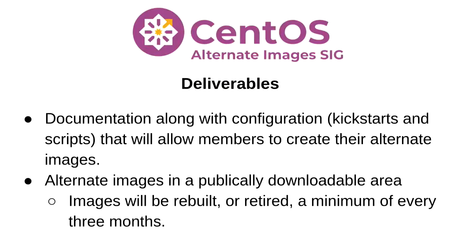Deliverables. There are really only going to be two: the first is documentation and a GitLab repo where we can put how to do things and the scripts. The other deliverable is the images themselves. For creating the images, we are going to, if at all possible, use CentOS infrastructure — CentOS's Koji. If we get Image Builder set up in CentOS, do that. We also want to use their mirroring and ISO storage infrastructure in a publicly downloadable area.